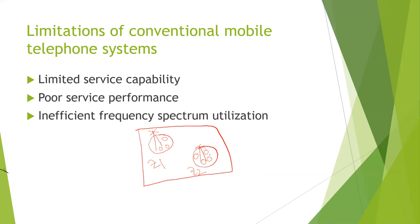If a fifth subscriber in Z1 wants to make a call, he won't get any chance to initiate it. Similarly, if a fifth person in Z2 wants to start a call, he can't. So when a subscriber moves from one zone to another, the call needs to be re-initiated — he must re-dial the number. And if all four channels are busy, the probability of getting a connection is zero. This is one drawback in the conventional mobile telephone system.